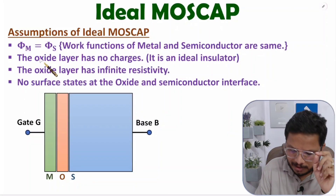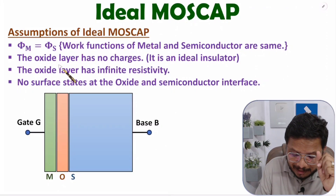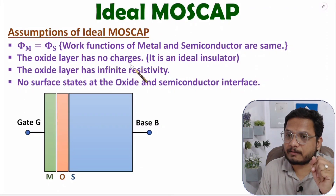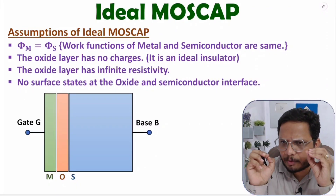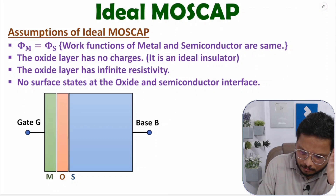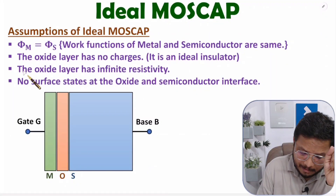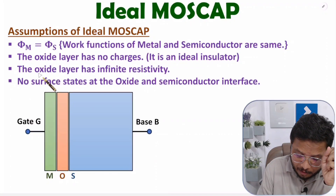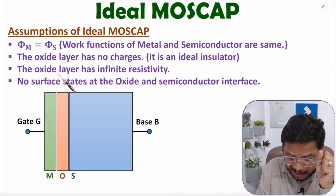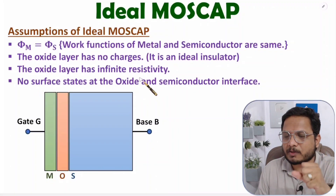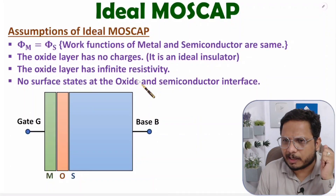The second assumption is based on the SiO2 layer. It states that the oxide layer has no charges — since SiO2 is practically an insulator, it should not have any charges. The third assumption, also based on the oxide layer, states that the oxide layer has infinite resistivity, meaning it behaves as an ideal insulator.